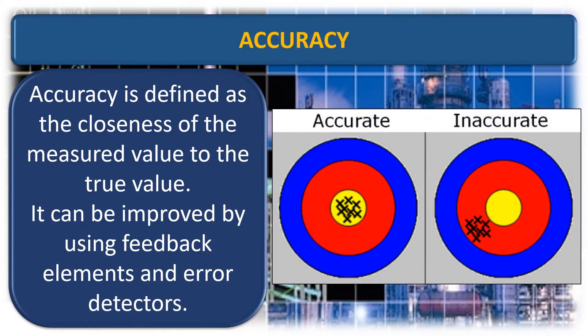Accuracy is defined as the closeness of the measured value to the true value. It can be improved by using feedback elements and error detectors.